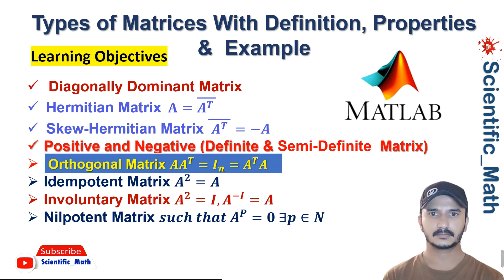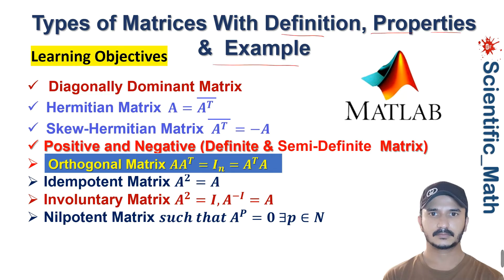Welcome to YouTube channel scientific_math. We are studying types of matrices with definitions, properties, and examples. In previous lectures we have already discussed some types of matrices like the diagonally dominant matrix, Hermitian, skew-Hermitian matrix, and the positive and negative definite and semi-definite matrix. I will provide the links in the video description for all these lectures. In this lecture we will discuss the orthogonal matrix and solve related examples.